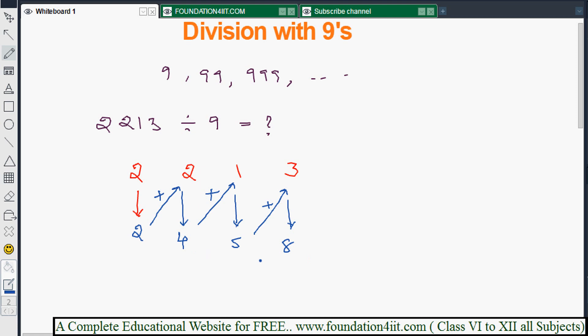That's it. Except for the last digit, the remaining is the quotient. The last digit is the remainder. So 245 is the quotient and 8 is the remainder. The quotient equals 245 and the remainder is 8.